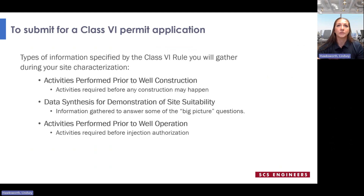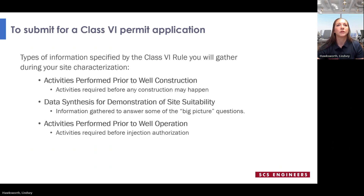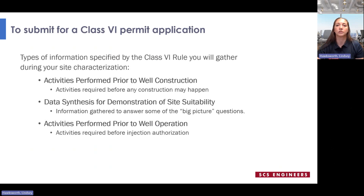EPA's guidance lists requirements to be submitted for a permit, organized into three sections. First, activities performed prior to well construction — simply the activities required before any construction can happen. Second, data synthesis for demonstration of site suitability — while all data gathered may not be entirely useful on its own, synthesizing the data paints a broader picture of the proposed site. Third, activities performed prior to well operation — these are required before any injection can be authorized.